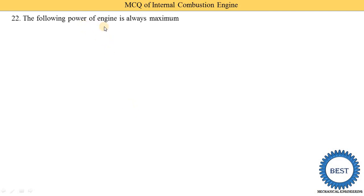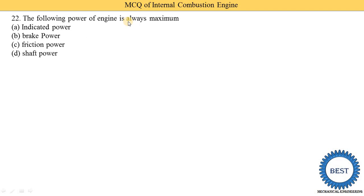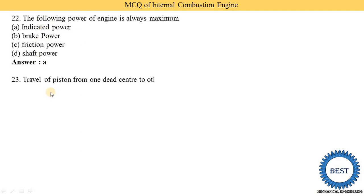Next MCQ: which power of an engine is always the maximum — option A: indicated power, option B: brake power, option C: friction power, option D: sub power? The correct answer is indicated power. The value of indicated power is always higher than brake power and friction power.